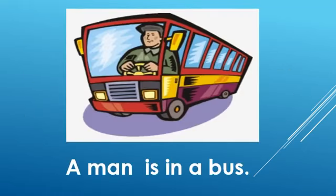Now children, let's look at this picture. What do you see in this picture? There's a bus, and who's sitting in the bus? A man is in a bus. That's how you will frame the sentence — A man is in a bus.